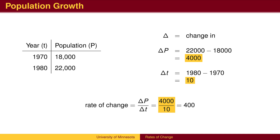This rate is a measure of the change in the variable in the numerator — in this case the population — for each change of 1 in the denominator. In this case, the answer of 400 tells us that each year the population goes up by 400.